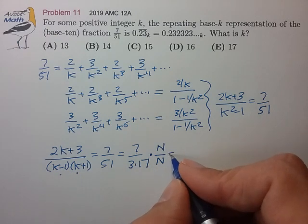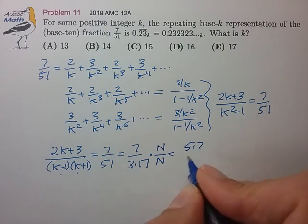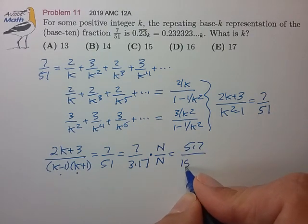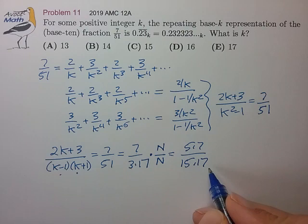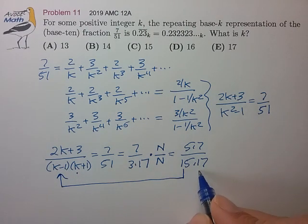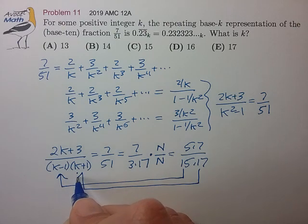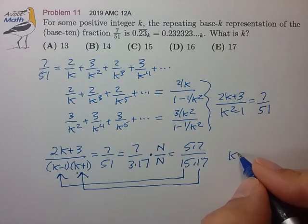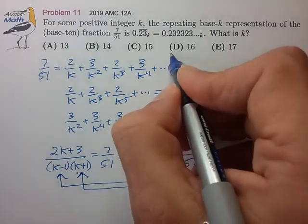Once you have 15 times 7 on the bottom, it's pretty easy to see how these things are going to line up, such that k minus 1 is 15, k is equal to 16, for choice D.